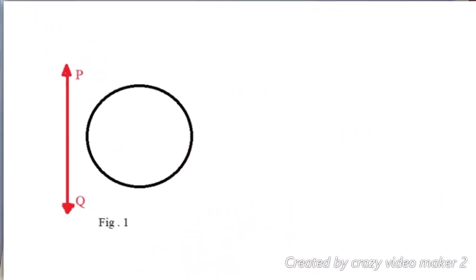When we are taking a straight line PQ and taking a circle with the center, there is no common point between the straight line PQ and the circle. There is a straight line PQ and the center of the circle — there is no common point between the straight line and the circle.